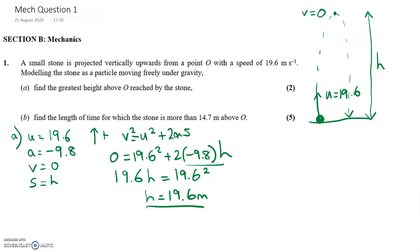Part B says, find the length of time for which it's more than 14.7 meters above the point it was thrown. So now I know that H is 19.6. Let's say 14.7 comes about here. And we want to work out the time that it goes above 14.7.